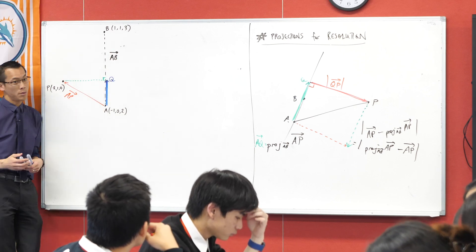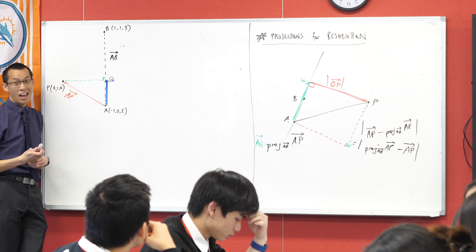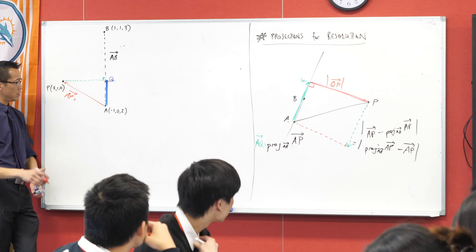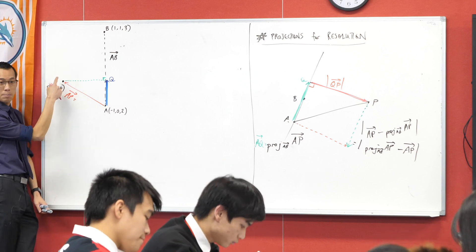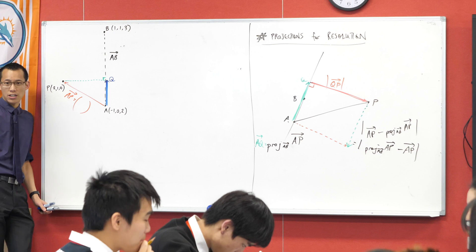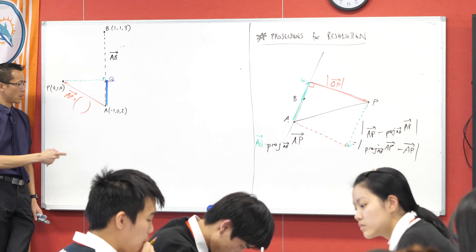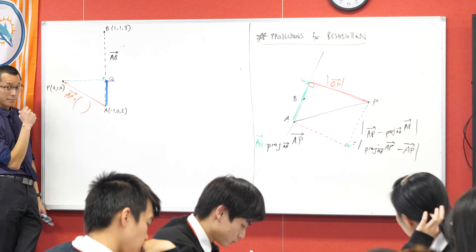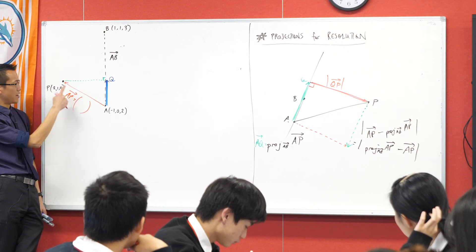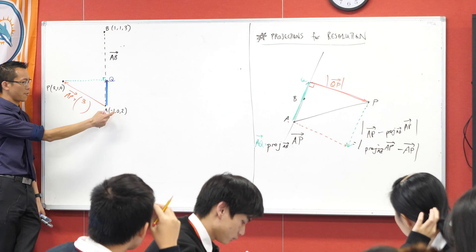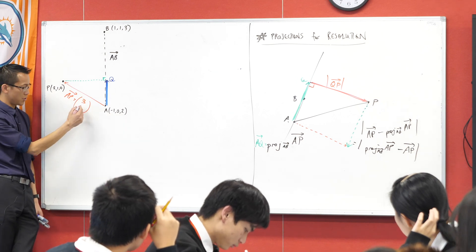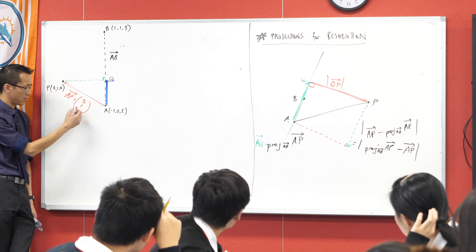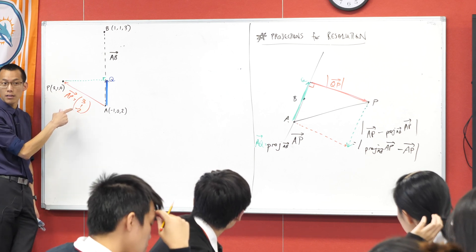Do you get from A to P? I've got to change the X, change the Y, change the Z. So what do you get as your vector AP? Yeah, I'm going to go from negative one to two, so that's a three. I'm going to go from zero to one, which is one, and then I'm going to go from two to zero, which is negative two. So there's our AP vector.